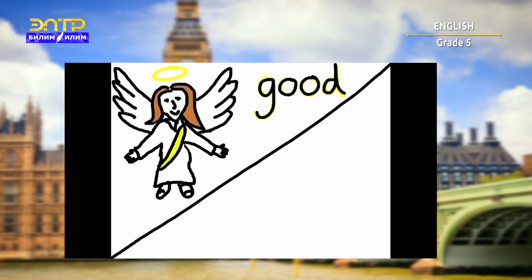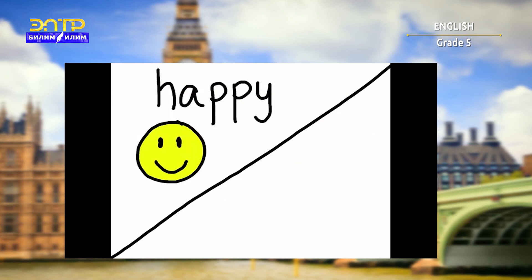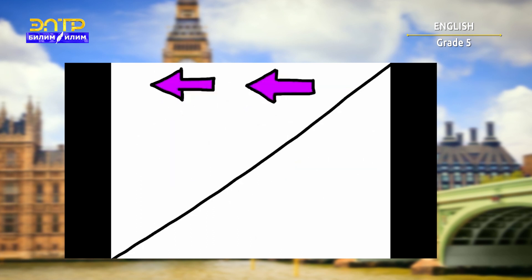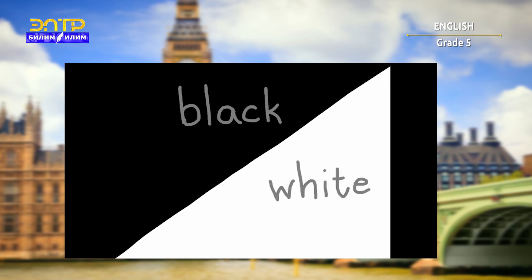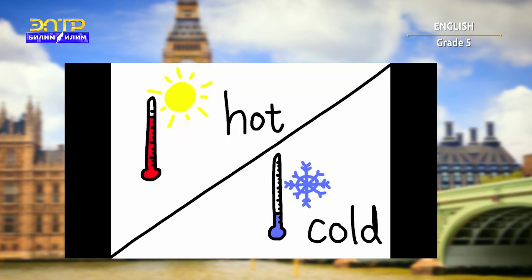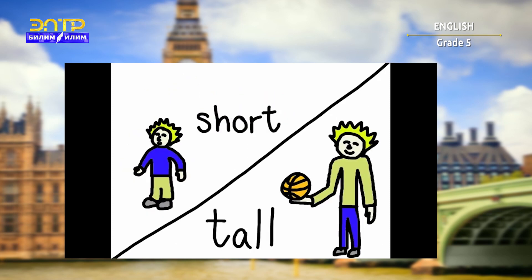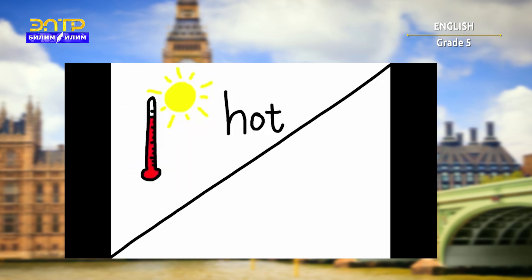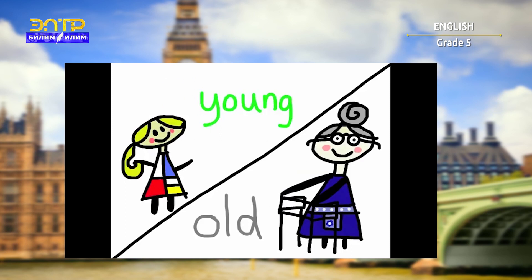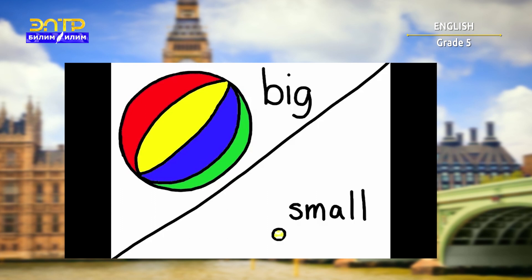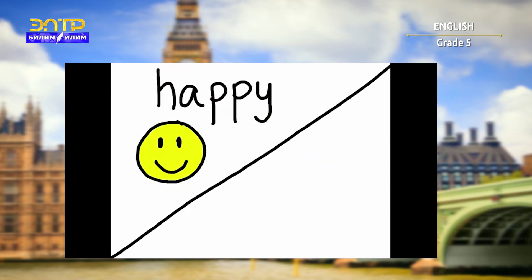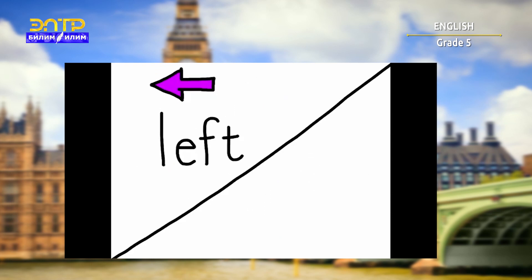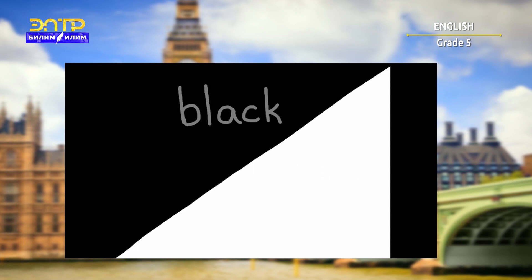Good and bad, happy and sad. Left and right, black and white. Hot and cold, young and old, short and tall, big and small. Good and bad, happy and sad. Left and right, black and white.